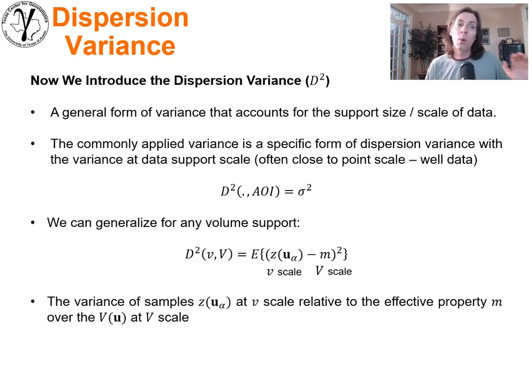Now we can introduce a brand new concept. Back when we first started talking about uncertainty, we introduced the concept of dispersion variance and we said that it's a general form of variance that accounts for the support size, the scale of the data or the thing that you're measuring. That means that variance is just one specific form. The commonly applied variance that everybody here knows and loves and works with all the time is in fact the dispersion variance.